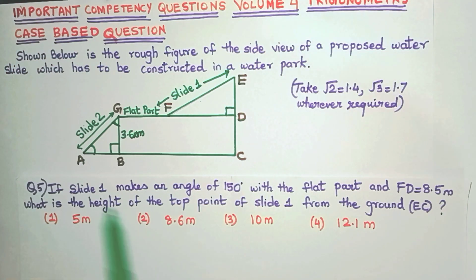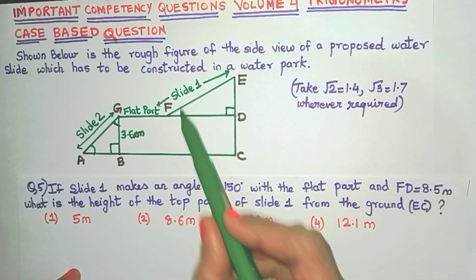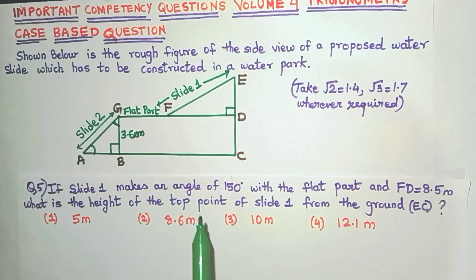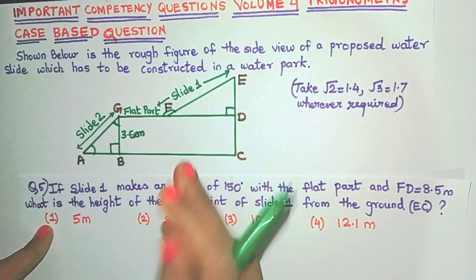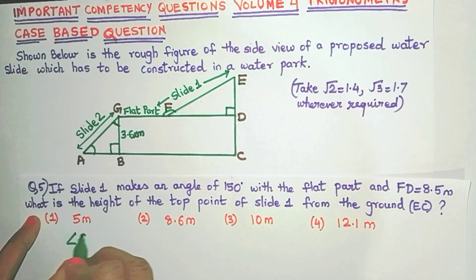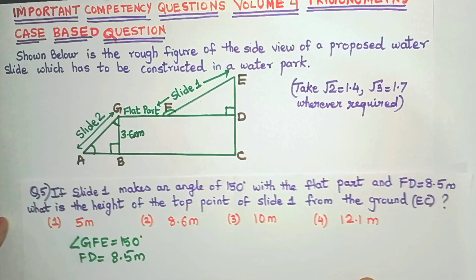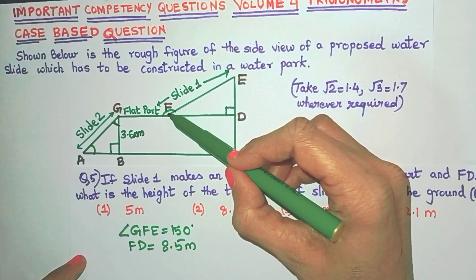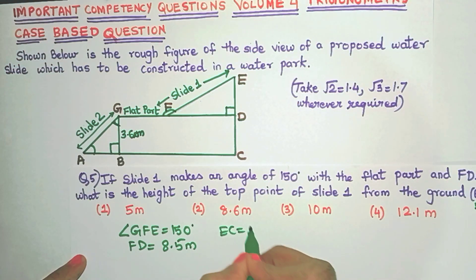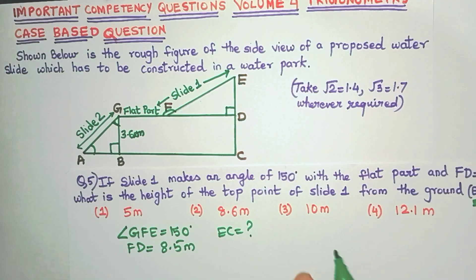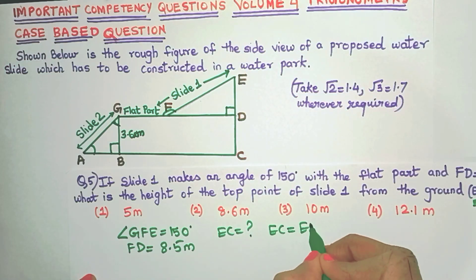Now question 5: if slide 1 makes an angle of 150 degrees with the flat part and FD = 8.5 meters, what is the height of the top point of slide 1 from the ground? Slide 1 makes angle GFE = 150° with the flat part. We need to find EC, the height of the top point. EC is not part of any right-angle triangle, but we can write EC = ED + DC.